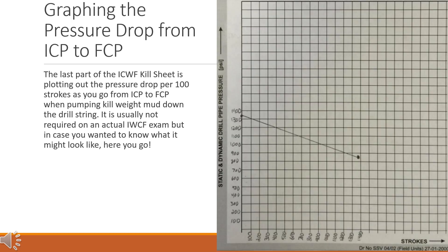Graphing the pressure drop from ICP to FCP. The last part of the IWCF kill sheet is plotting out the pressure drop per 100 strokes as you go from ICP to FCP when pumping kill weight mud down the drill string. It is usually not required on an actual IWCF exam, but in case you wanted to know what it might look like, here you go.